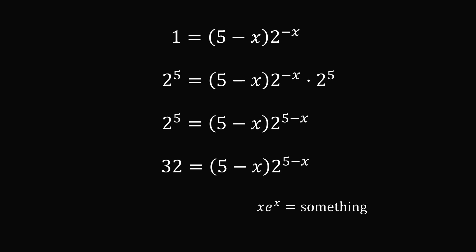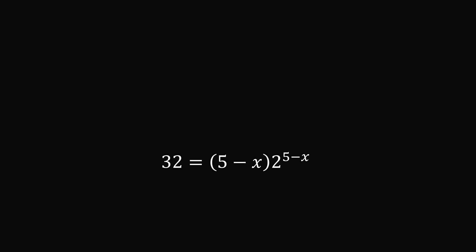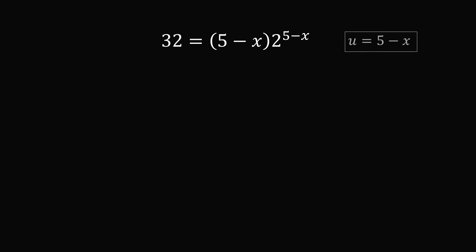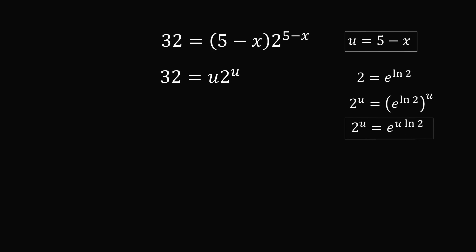To make things more readable, let's substitute u equals 5 minus x. The equation simplifies to 32 equals u multiplied by 2 to the power of u. We want to change 2 to the power of u to be e to the power of something. Since 2 equals e to the power of the natural log of 2, raising both sides to the power of u gives e to the power of the natural log of 2, all to the power of u. Multiplying the exponents, 2 to the power of u equals e to the power of u times the natural log of 2. Substituting that in, we're getting very close.